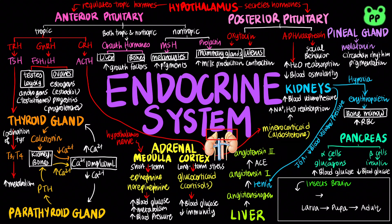In insects, molting and development are controlled by a combination of hormones. The insect brain secretes prothoracicotropic hormone, or PTTH, which triggers the prothoracic gland to release ecdysteroid, or ecdysone. Ecdysone promotes molting in the presence of juvenile hormone and development of adult characteristics in the absence of juvenile hormone. The juvenile hormone promotes the retention of larval characteristics.